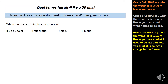Moving on — silver learning objective, grade five to six, where you should be trying to get a second time frame into your work. Quel temps faisait-il il y a cinquante ans? — What was the weather like 50 years ago? Pause the video, answer the question, and make yourself some grammar notes. So where are the verbs in these sentences? Il y a, il fait, il neige, il pleut.